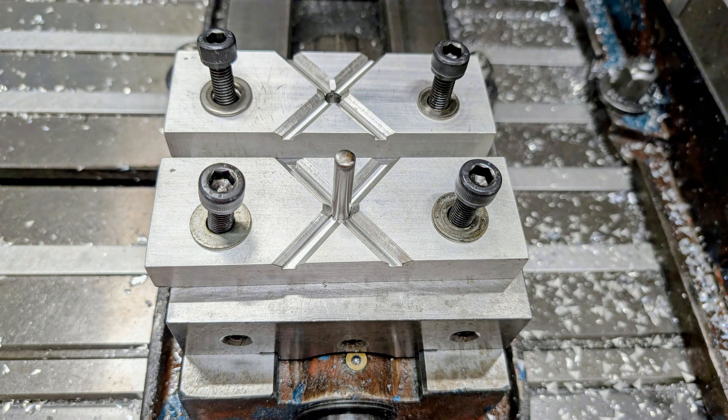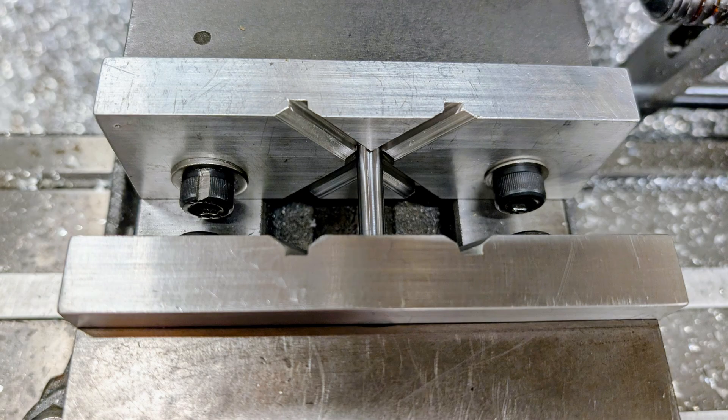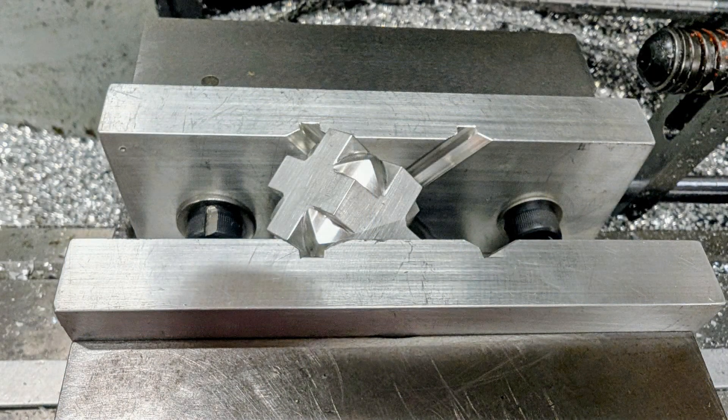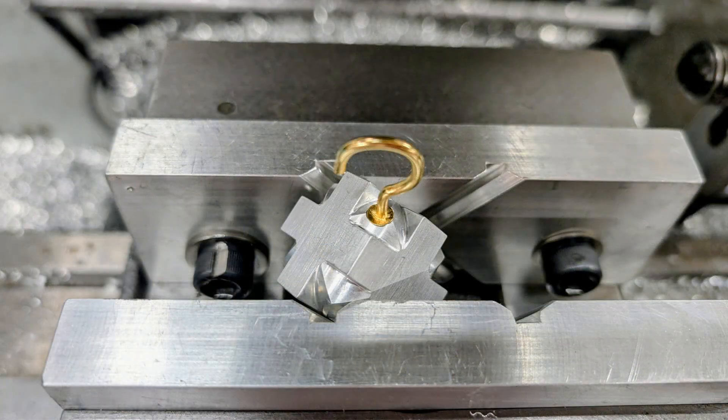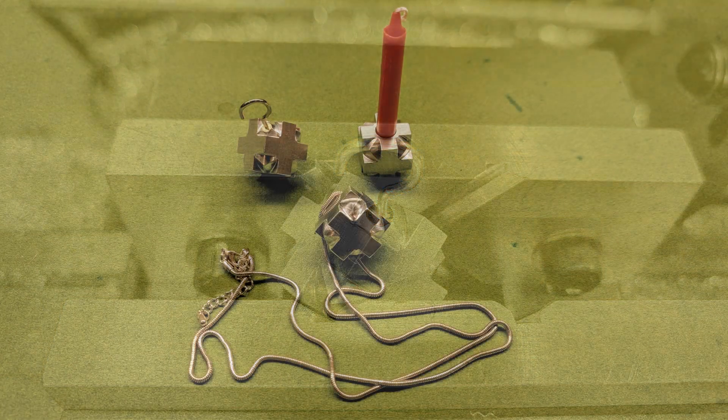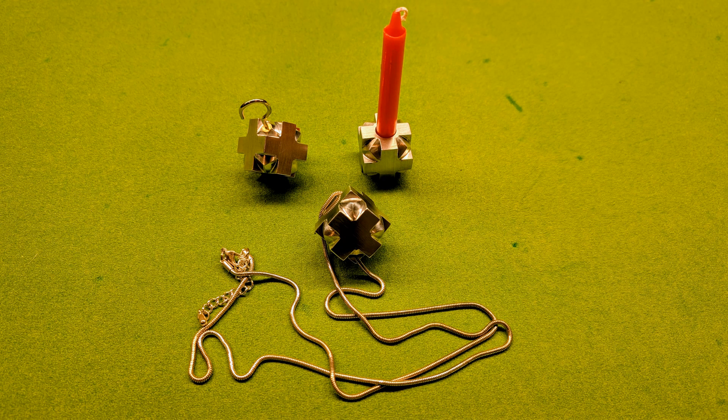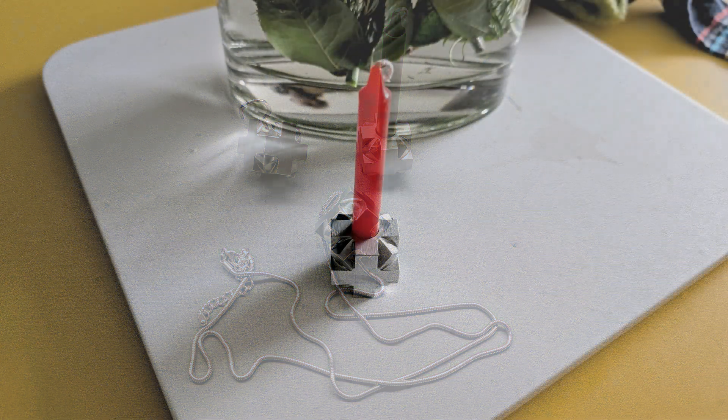The first version will have a small hook so it can hang on the Christmas tree. To drill the hole in the top corner, I'll be using these compound angle jaws. And here are a couple of variations. One with a hole for a candle and the other drilled for a necklace chain.